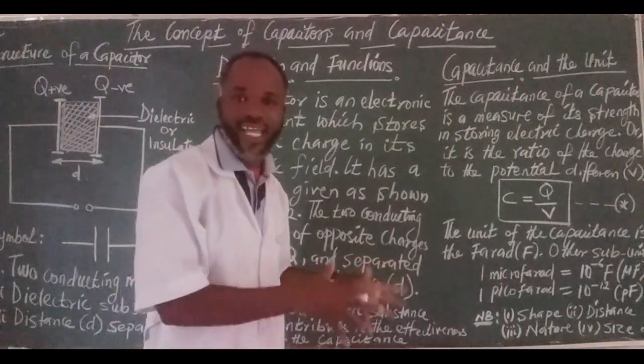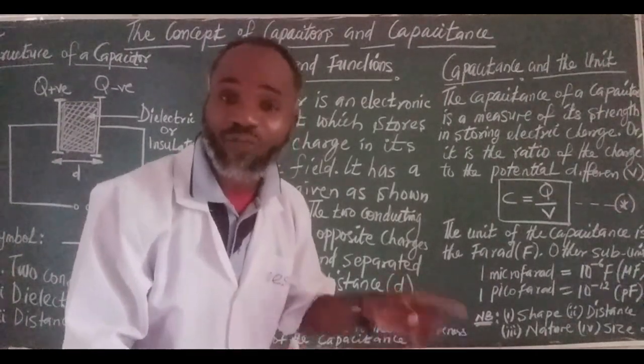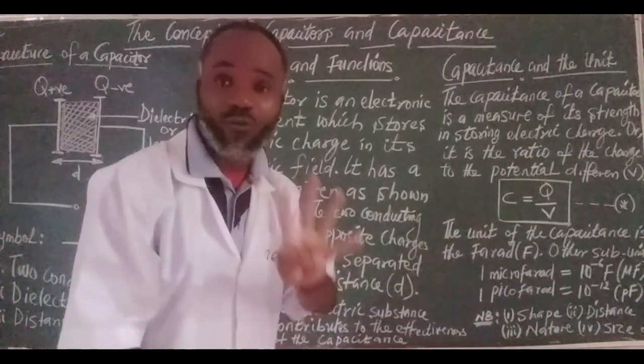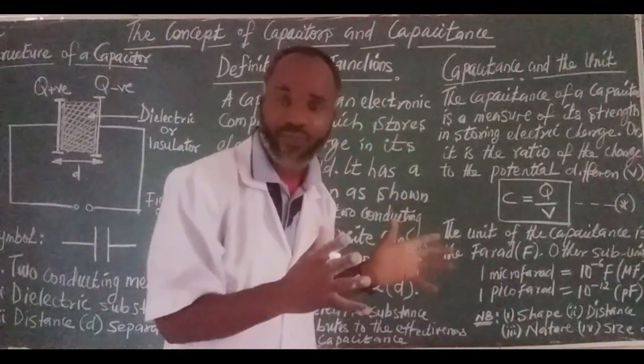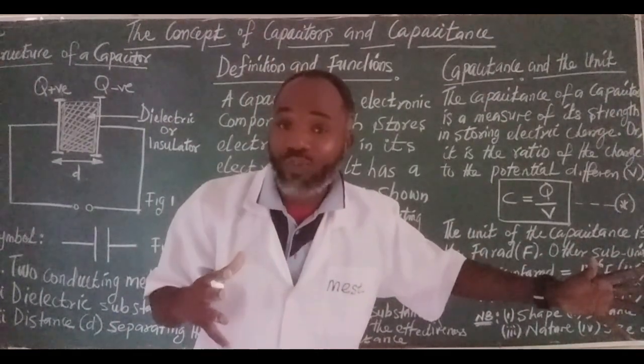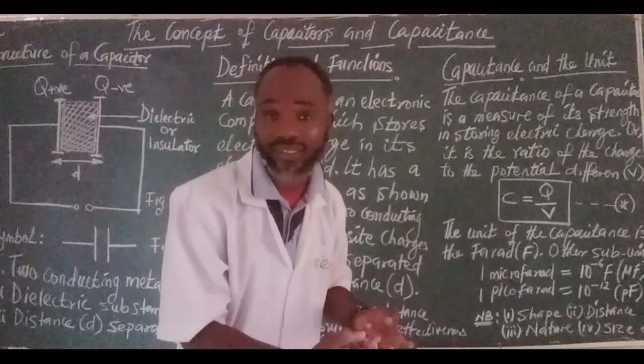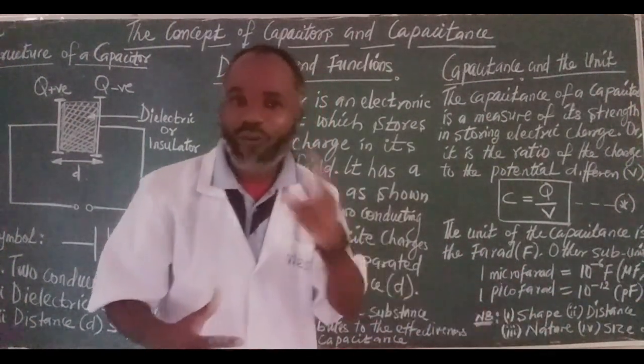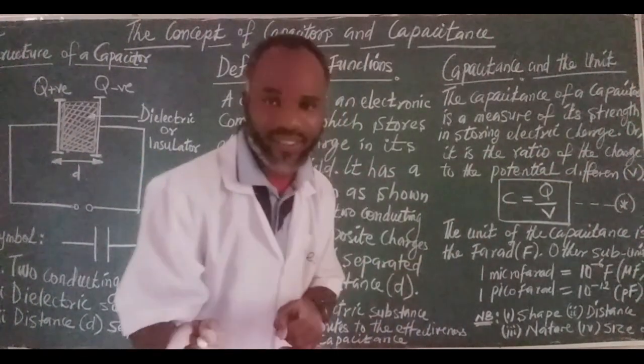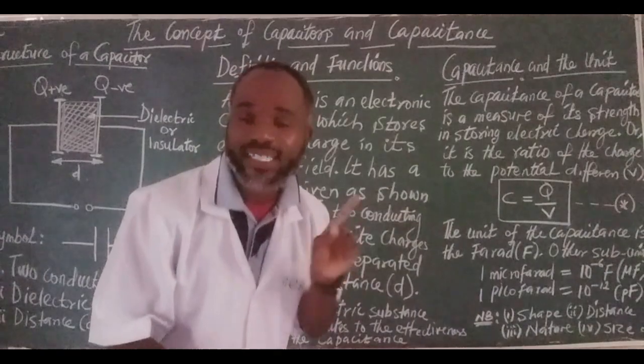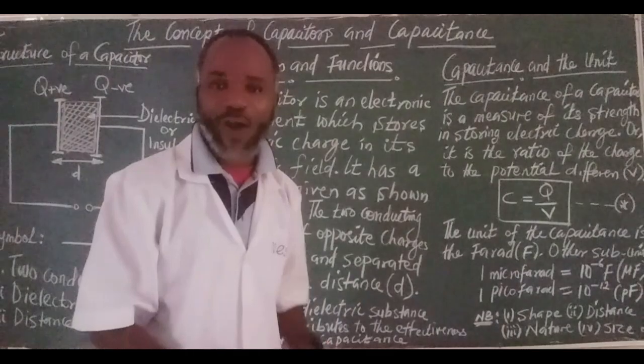Now, having said that, we also need to know the factors upon which the capacitance of a capacitor depends. And there are four factors. One is the shape of the capacitor. The second one is the distance between the two plates. The third one is the nature of the dielectric substance separating the two plates. The fourth one is the size, how big or how small the capacitor is. All these four factors determine the effectiveness of the capacitance of a capacitor.